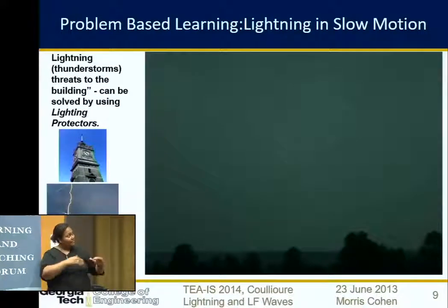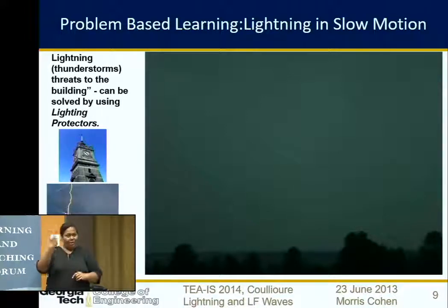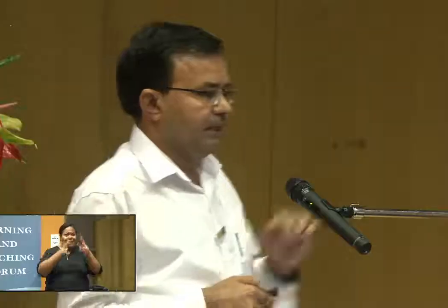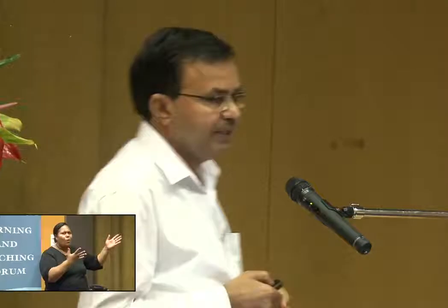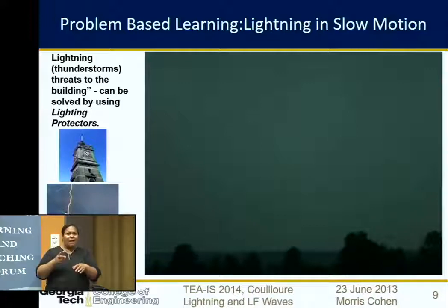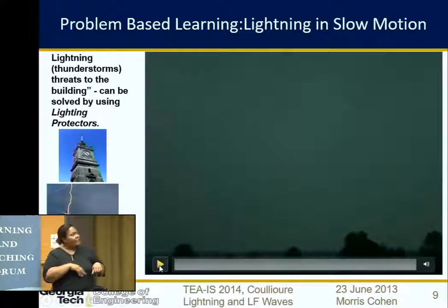The next example is problem-based: lightning conductors. You may have seen that over temples, churches, and big government buildings there is something called a lightning conductor — it protects the buildings from lightning. I give students the problem: there is a threat to buildings from lightning, how can we solve it? Earlier I would simply teach them the conductor solution, but at a conference in 2014 a colleague made a presentation on real-time lightning recording. Since then I have been using that recording in my teaching to explain voltage and current associated with lightning and how we can protect buildings.